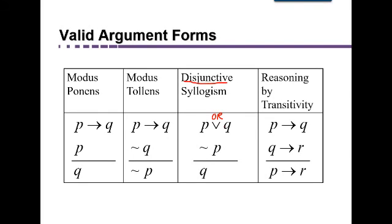And then my personal favorite, reasoning by transitivity. If you know P implies Q, P causes Q to happen, and you know Q causes R to happen, then P must also cause R to happen. It's like a chain reaction. P makes Q happen, which makes R happen. So we say P must make R happen.